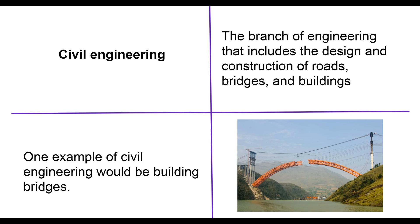Another commonly thought-of type is the civil engineer. A lot of times when people think of engineers, they picture someone building a building or a bridge — and that's exactly what civil engineers do. Civil engineering is the branch that includes the design and construction of roads, bridges, and buildings. One example would be building bridges, which can be truly complicated, especially over a large area. Civil engineers are responsible for a lot of the infrastructure we use for traveling and daily life.